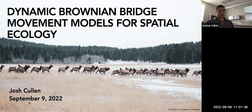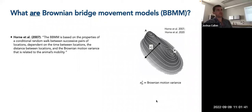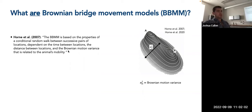What are Brownian Bridge Movement Models? Dynamic Brownian Bridge Movement Models are a particular type or extension of Brownian Bridge Movement Models. With respect to animal movement and space use, they were initially proposed by Horne and colleagues in 2007. The Brownian Bridge Movement Model, or BBMM, is based on the properties of a conditional random walk between successive pairs of locations, dependent on the time between the locations, the distance between the locations, and the Brownian motion variance as related to animals' mobility.